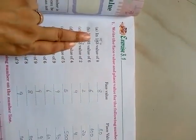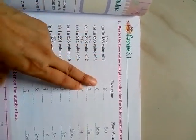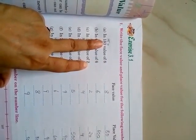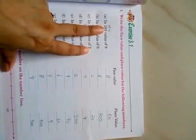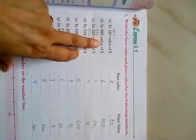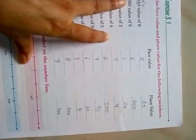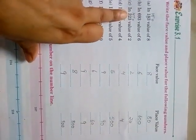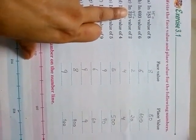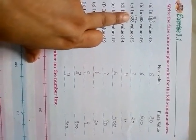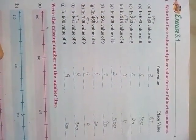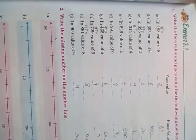Since we have done this exercise earlier, let me give you some examples. In 800, the face value of 8 is always 8, and the place value of 8 is 800. In 693, the face value of 6 is 6, and the place value is 600. In 323, the face value of 2 is 2, and since it is on the tens place, its place value is 20. We will do this more clearly in the next class. Take care, bye!